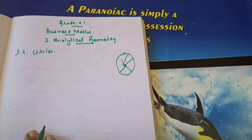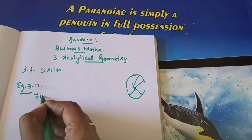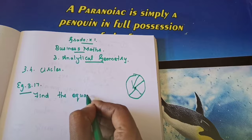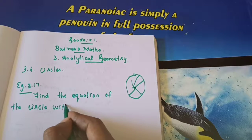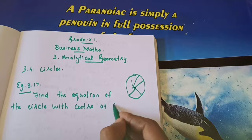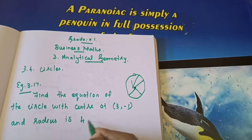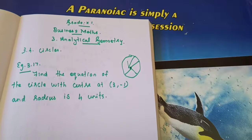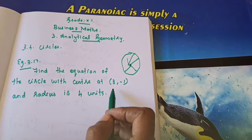Let's move to the problems. Example 3.17: Find the equation of the circle with center at (3, -1) and radius 4 units. Since the center is at some point — not the origin — we will use the first formula: x minus h whole square plus y minus k whole square equals R square.